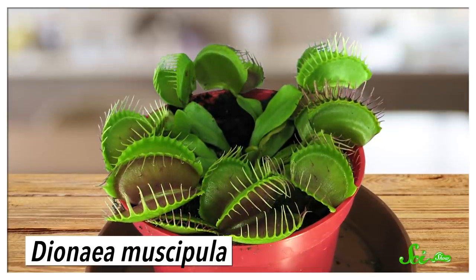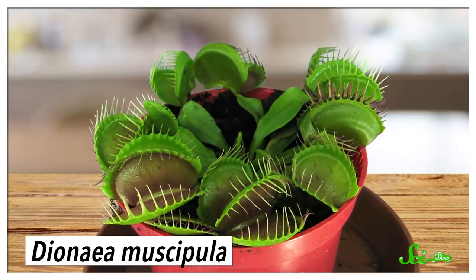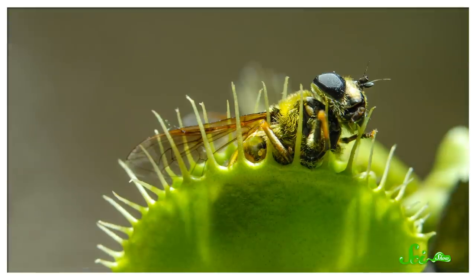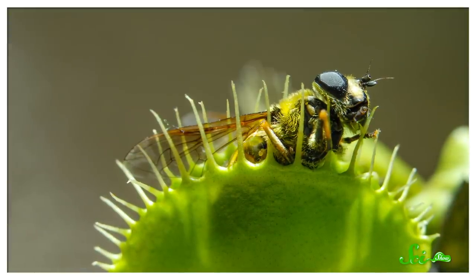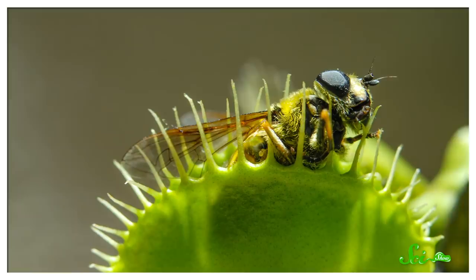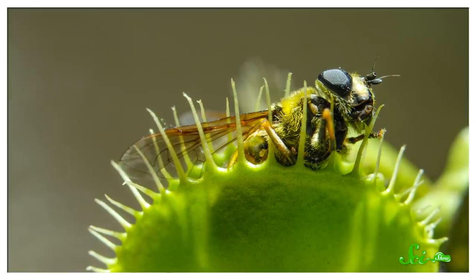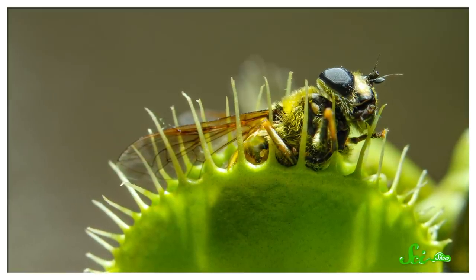And yes, we're talking about those infamous flytraps that snap up unsuspecting flies with their leafy mouths. You see, the study found that an insect needs to bump small trigger hairs on the plant's leaves at least five times before the plant would begin secreting enzymes to digest it.